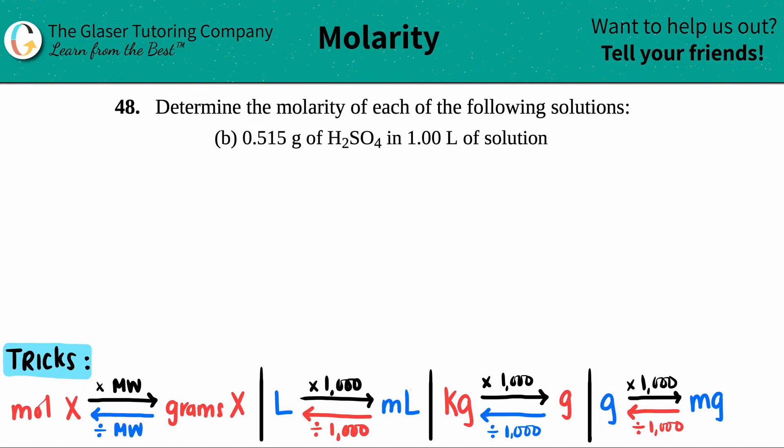Number 48: determine the molarity of each of the following solutions, letter b. We have 0.515 grams of sulfuric acid (H2SO4) being placed in one liter of solution, and we have to find the molarity.